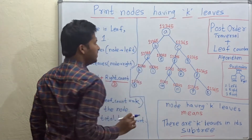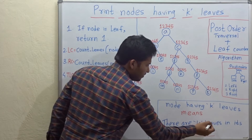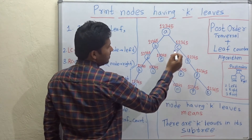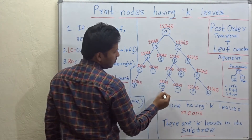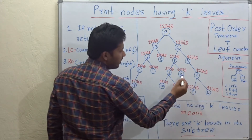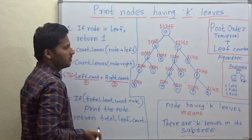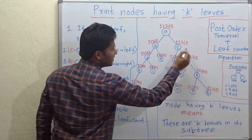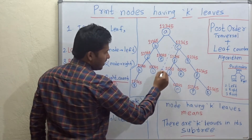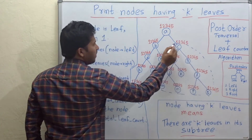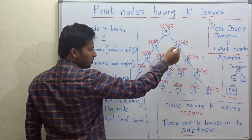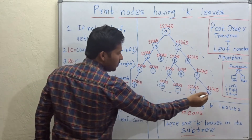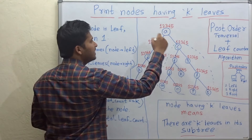Nodes having k leaves means there are k leaves in its subtree. For example, node C has 1, 2, 3, 4, and 5 leaves in its subtree. This is the subtree of C, meaning C serves as the root of this subtree. So for C, there are 5 leaves — the node C has 5 leaves.